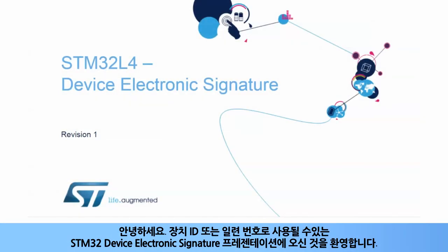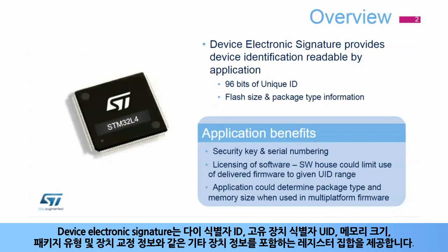Hello and welcome to this presentation of the STM32 device electronic signature, which may be used as a device identification or serial number. The device electronic signature provides a set of registers containing die identification, unique device identifier or UID, and other device information such as memory size and package type, and device calibration information.